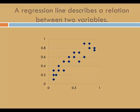Here's a scatter plot of two variables. There appears to be a strong, positive, linear relation. A regression line will describe that relation.